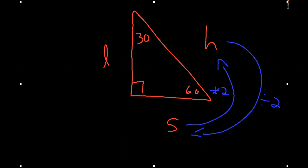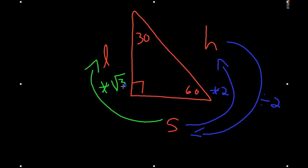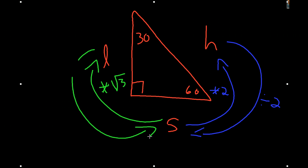If you know the value of the short leg — let's say the short leg had a length of 4 units — you take that value and you multiply it times the square root of 3. So if the short leg had a value of 4 units, the long leg has a length of 4 times the square root of 3 units. Conversely, if you go from the long leg to the short leg, you then divide by the square root of 3.